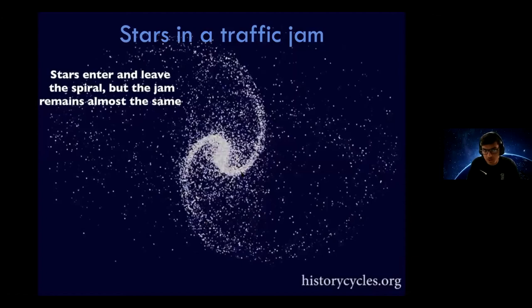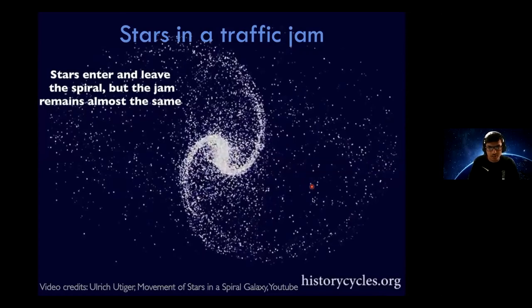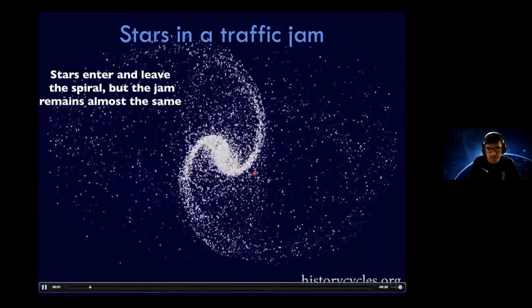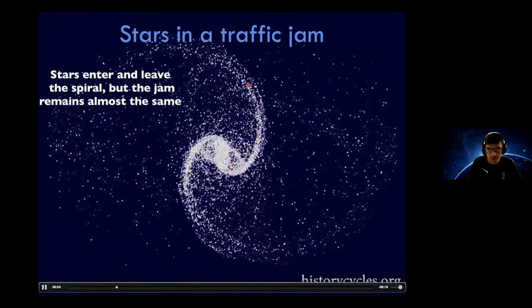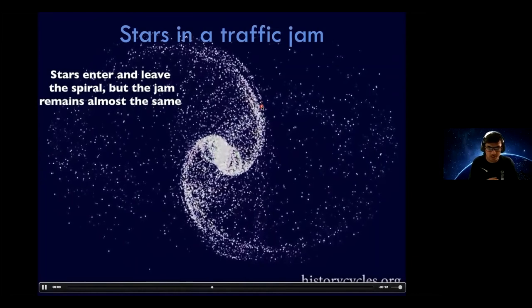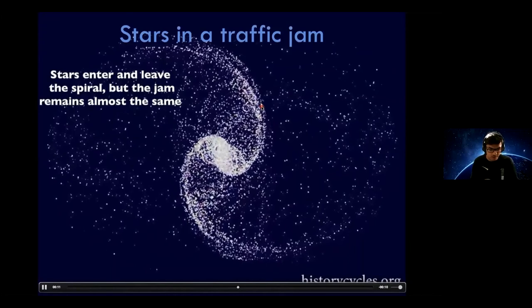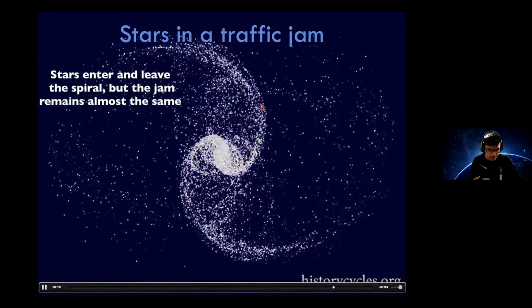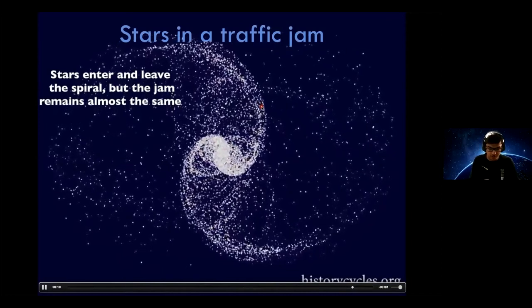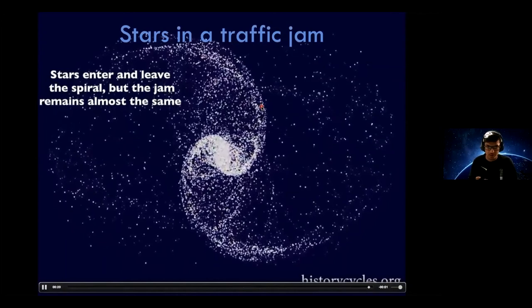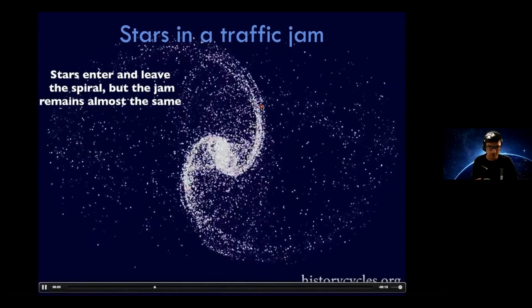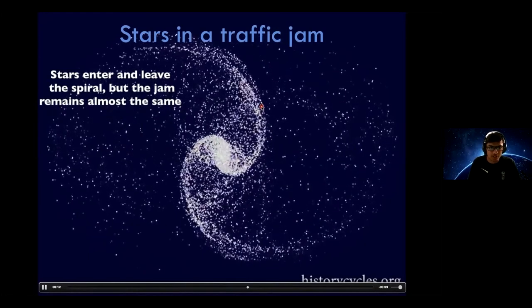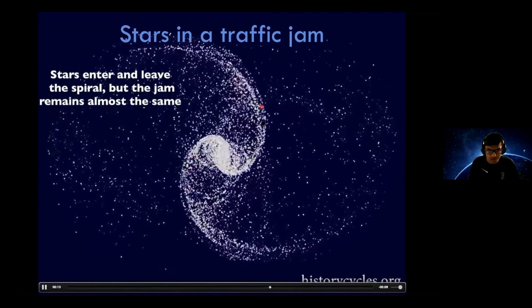We also saw spirals and bars in galaxies — but is it always the same stars that make up the spiral? If you follow the spiral you can see that stars are leaving and new stars are entering, while the pattern remains the same. This is similar to a traffic jam: one car slows down, the cars behind slow down, but the first car speeds up and the jam just keeps getting refreshed. So spiral arms and bars are basically like traffic jams in a galaxy.